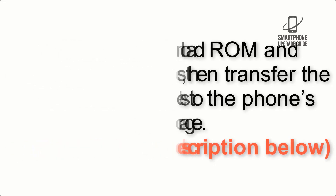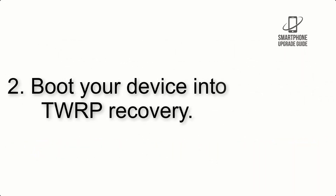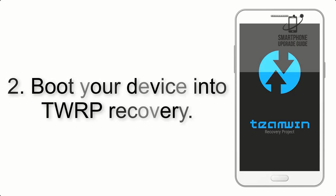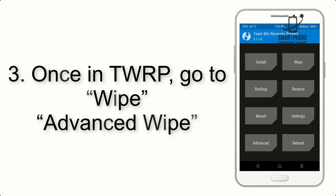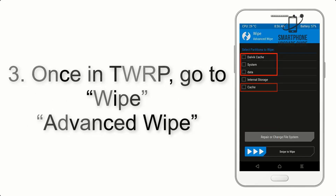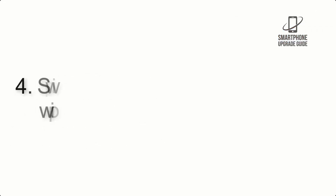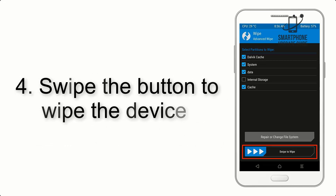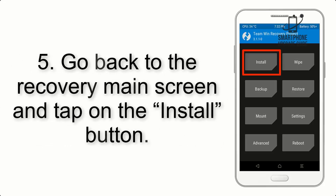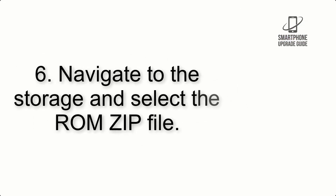Step 2: Boot your device into TWRP recovery. Once in TWRP, tap on Advanced Wipe and select the checkboxes as shown in the image, excluding internal storage. Step 4: Swipe the button to wipe the device. Step 5: Go back to the recovery main screen and tap on the Install button.